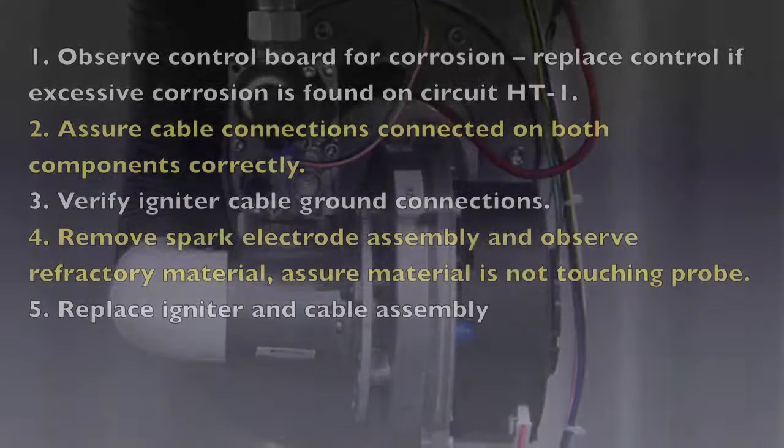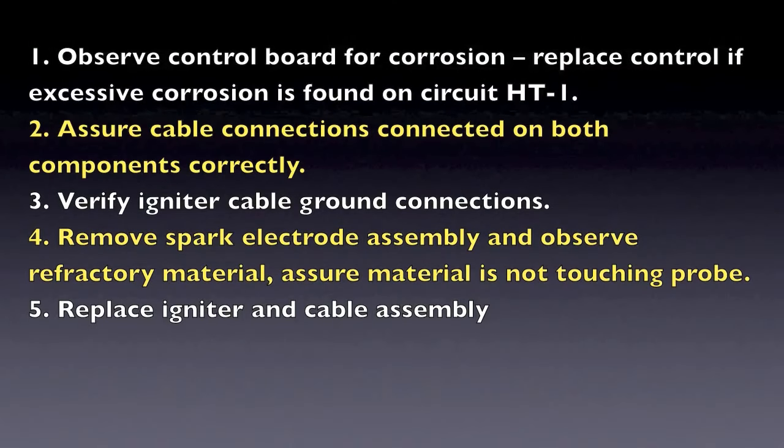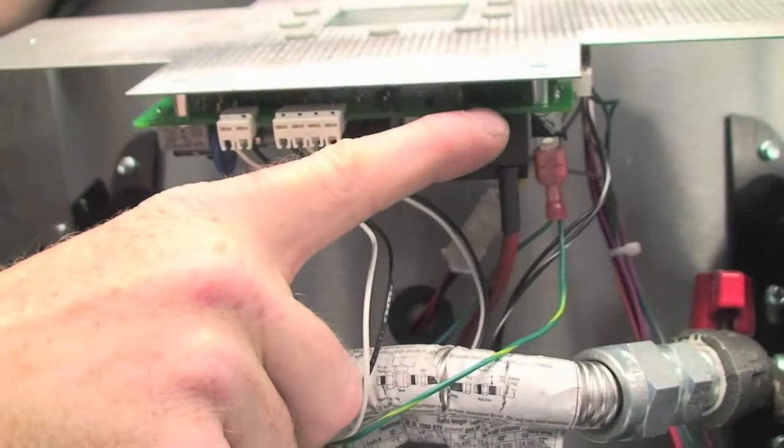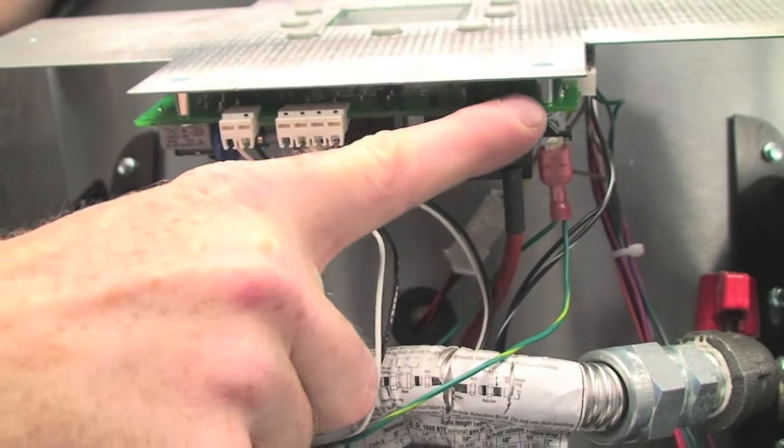If control will not reset from the fault, the following steps should be taken. First, observe control board for corrosion. Replace control if excessive corrosion is found on circuit HT1.